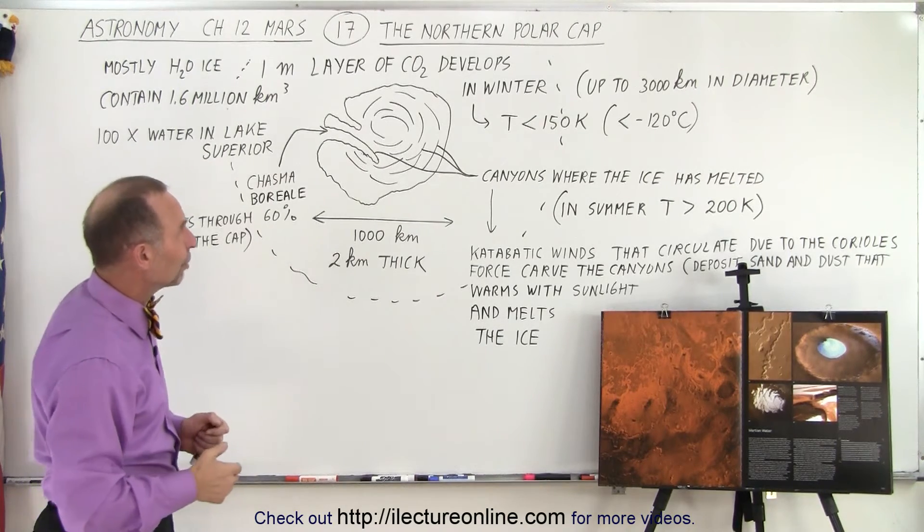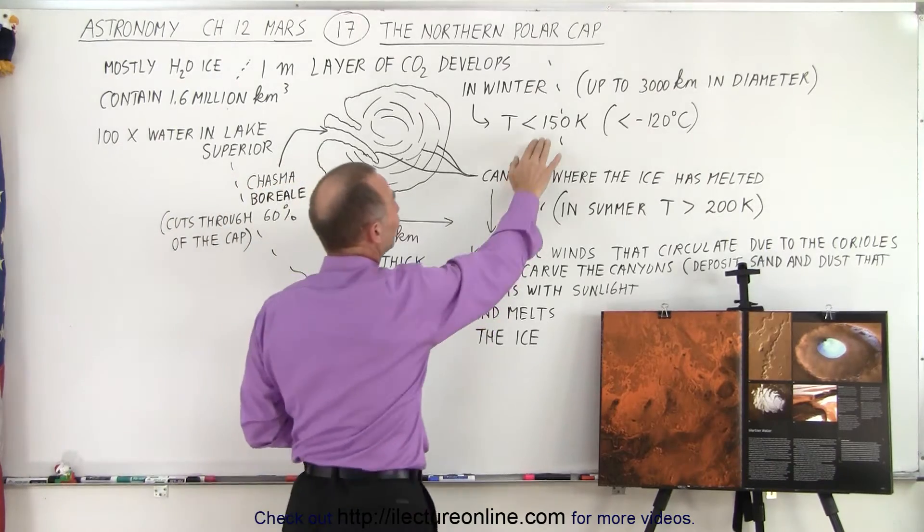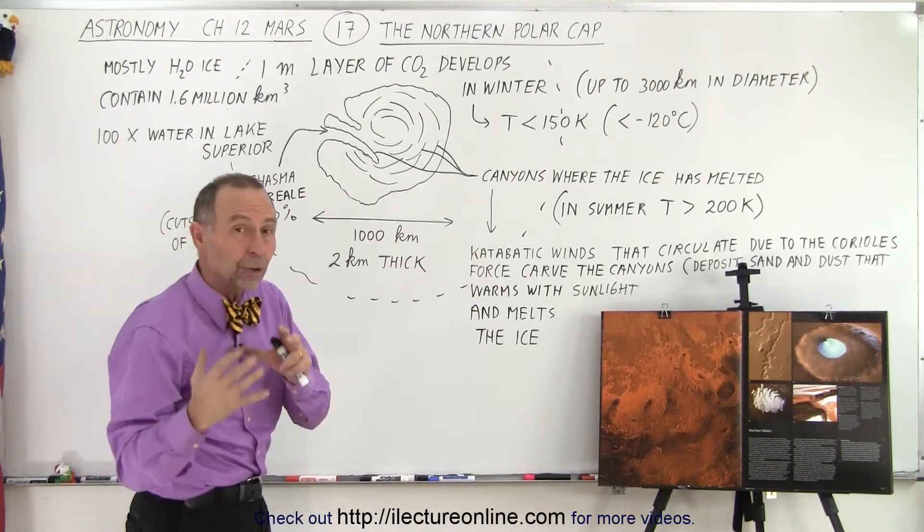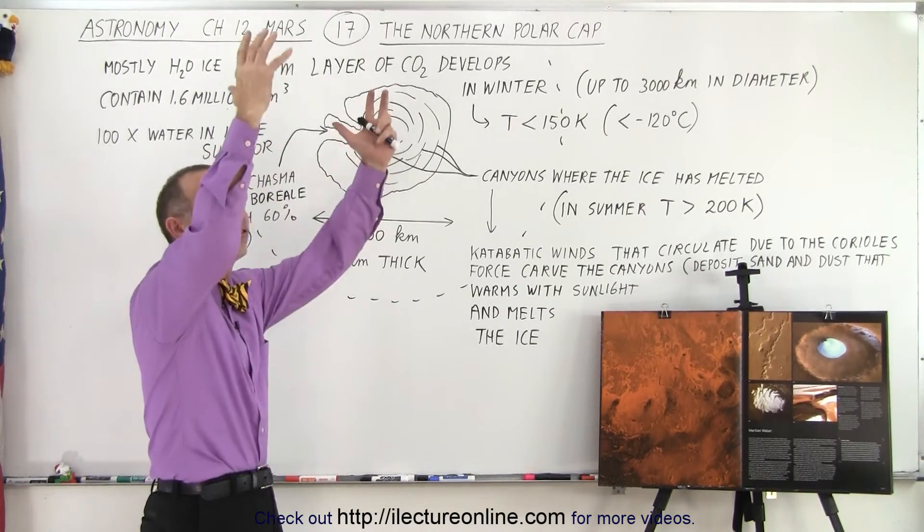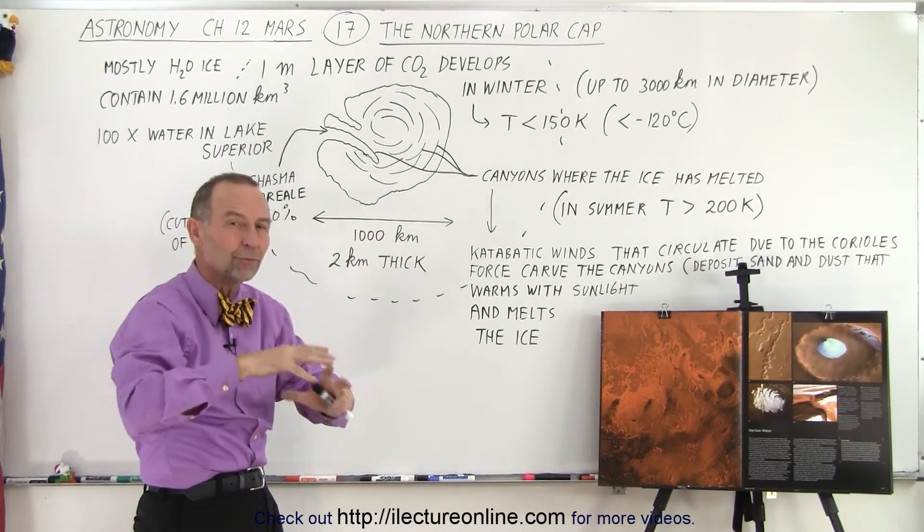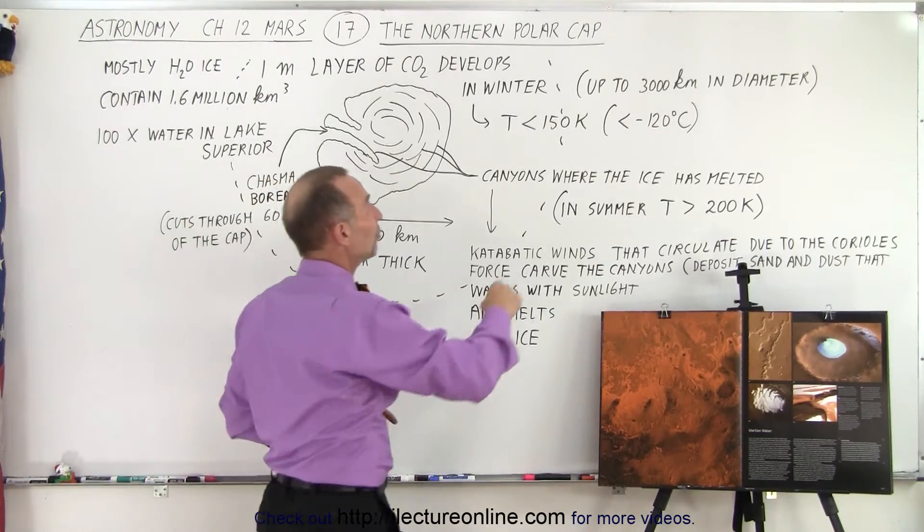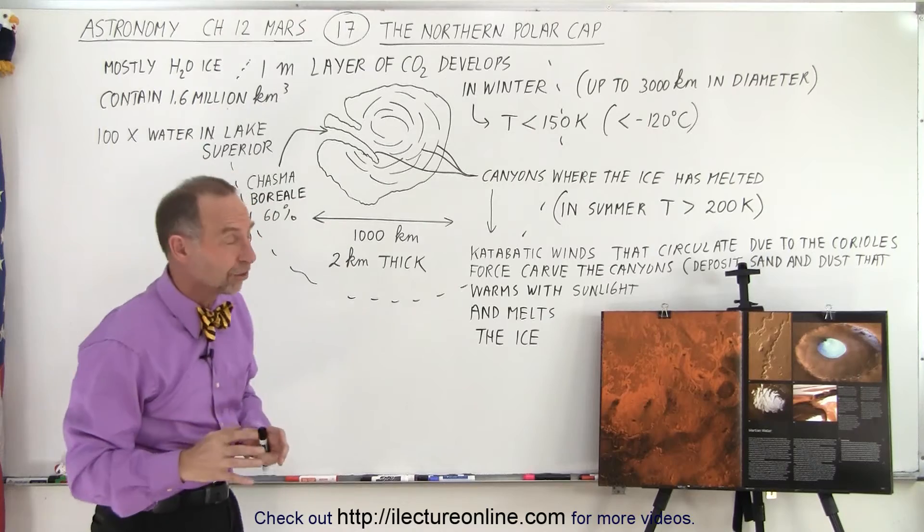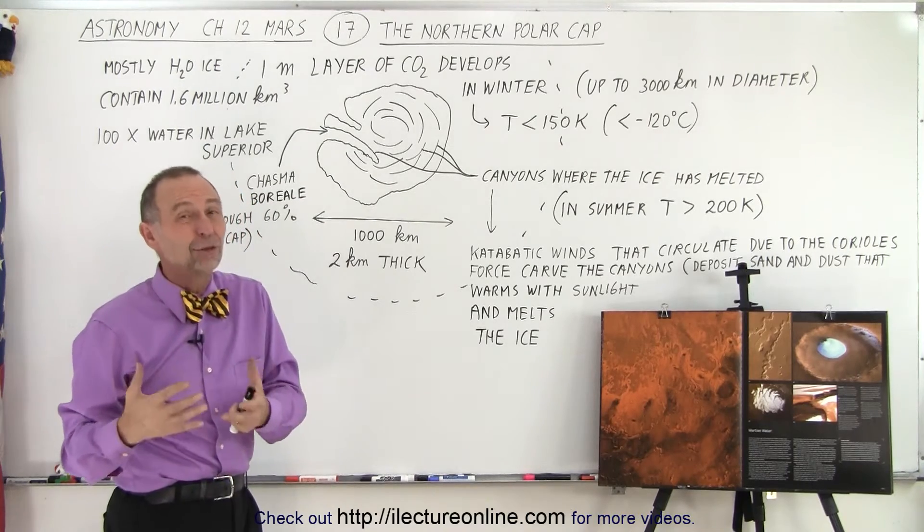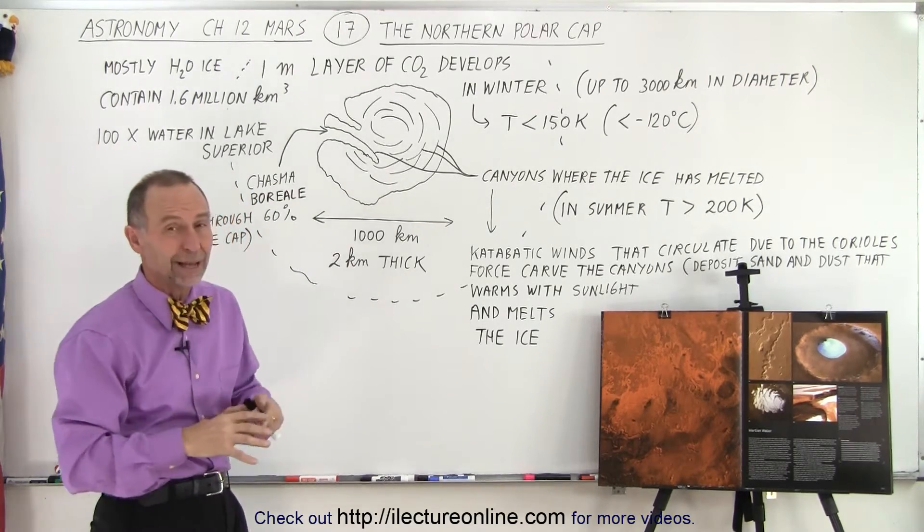The temperature at the pole in wintertime stays below 150 Kelvin. In the wintertime there's no sunlight that reaches the pole. It just radiates heat to space and cools down to temperatures below 150 K, which means colder than 120 degrees Celsius, colder than minus 200 Fahrenheit. It's bitterly cold in wintertime.